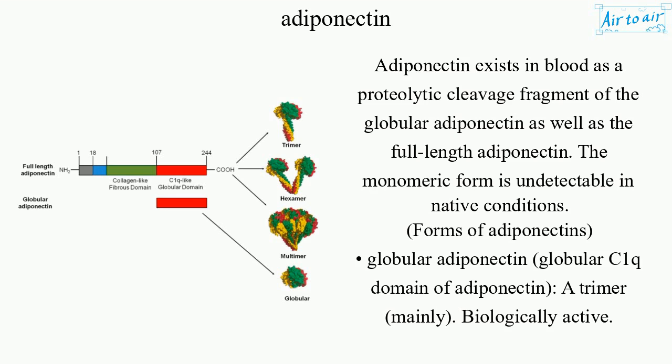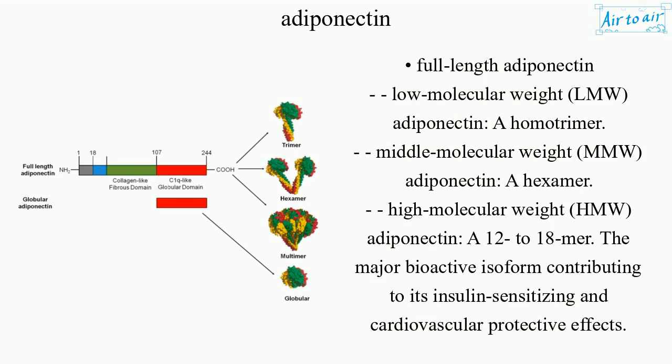Forms of adiponectin include: globular adiponectin — the globular C1Q domain of adiponectin, a trimer, mainly biologically active; and full-length adiponectin forms: low molecular weight (LMW) adiponectin, a homotrimer; middle molecular weight (MMW) adiponectin, a hexamer; and high molecular weight (HMW) adiponectin, a 12–18 mer, which is the major bioactive isoform contributing to its insulin-sensitizing and cardiovascular protective effects.